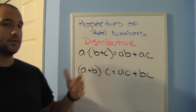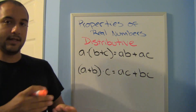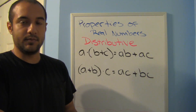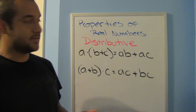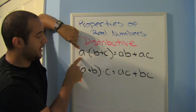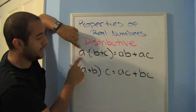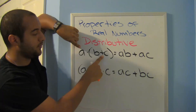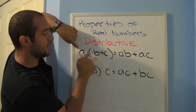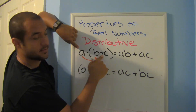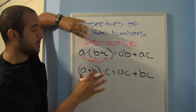To distribute means to give out — like distributing papers in a class, passing one out to each student. In the distributive property, you have a times something in parentheses, and you distribute that a to everyone in the parenthesis. The terms must be separated by addition or subtraction. So: a times (b plus c) equals a times b plus a times c. You distribute the a to both b and to c.